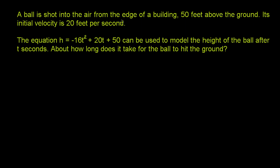A ball is shot into the air from the edge of a building, 50 feet above the ground. Its initial velocity is 20 feet per second. The equation h is equal to negative 16t squared plus 20t plus 50 can be used to model the height of the ball after t seconds.